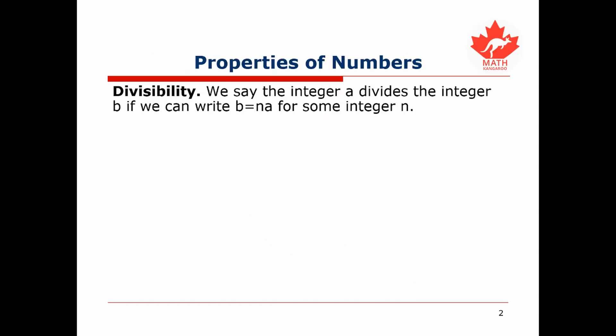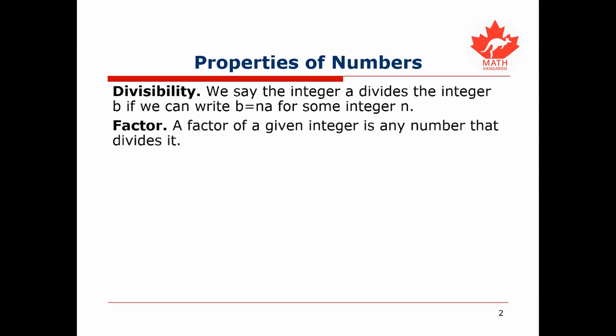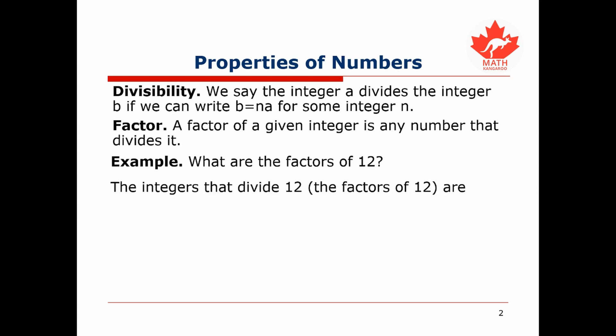A crucial concept in properties of numbers is divisibility. We say that the integer a divides the integer b if we can write b equals n times a for some integer n. A factor of an integer is any number that divides it. For example, the factors of 12 are 1, 2, 3, 4, 6, and 12, because these are all the numbers that divide 12. Notice that 1 divides 12 and 12 divides 12, so a number always has at least 2 factors, namely itself and 1.